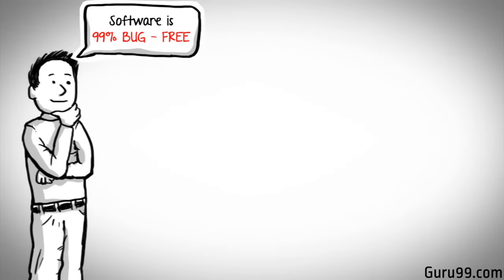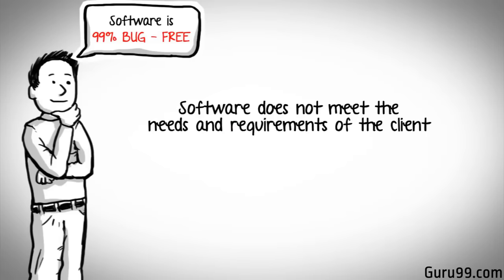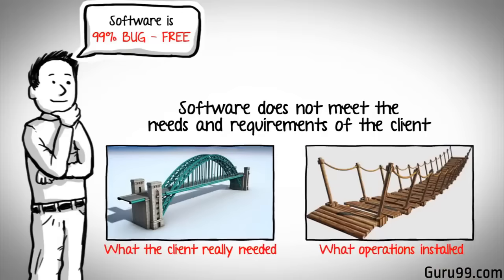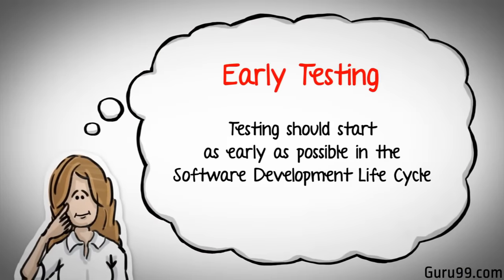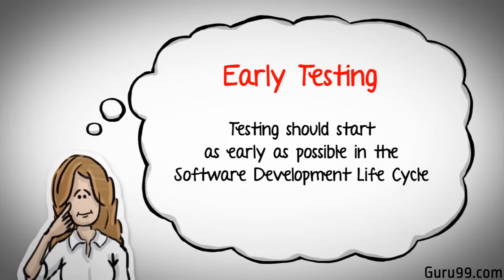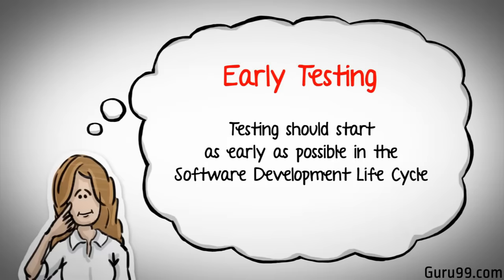But what if you work extra hard, taking all precaution and making sure your software product is 99% bug free, and the software does not meet the needs and requirements of the client? This leads us to our next principle, which states that absence of error is a fallacy. Finding and fixing defects does not help if the system built is unusable and does not fulfill the user's needs and requirements. To fix this, the next principle of testing — early testing — states that testing should start as early as possible in the software development lifecycle so that any defects in the requirements or design phase are captured as well.